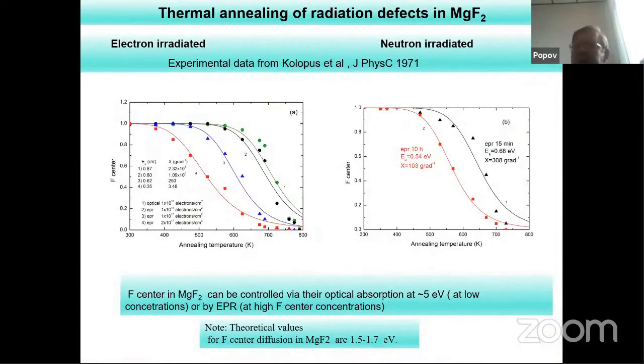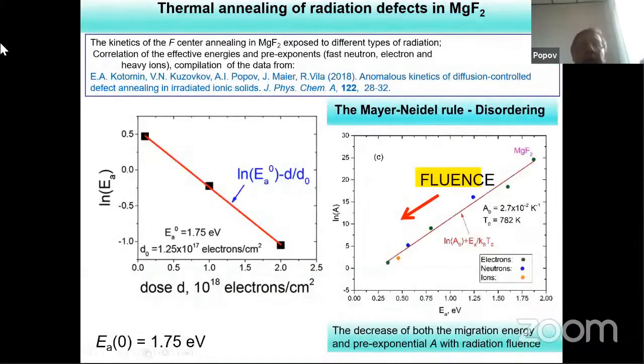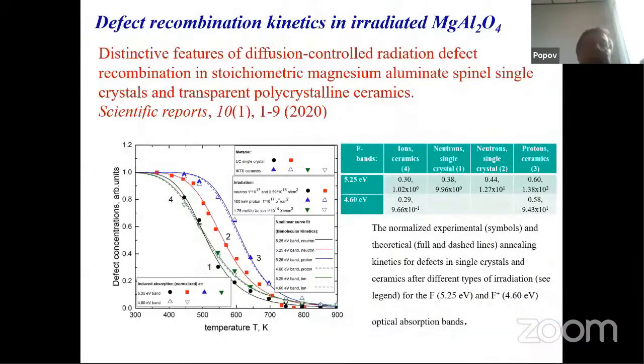We also performed similar analysis for magnesium fluoride. And we added data for electron radiation, which used together with electron, neutron, and ion. Now we can compare and make curves which will relate all types of radiation in terms of activation energy for defect annealing. Similar data were obtained for the most important ceramics for fusion: magnesium aluminate spinel.